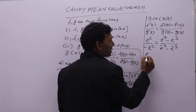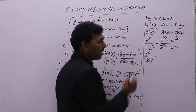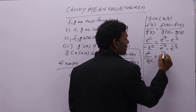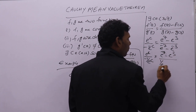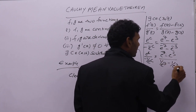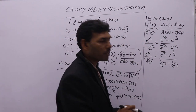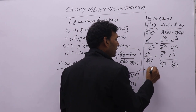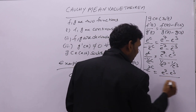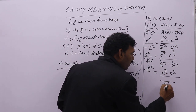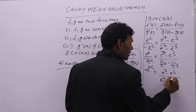So e power minus c can be written as minus 1 divided by e power c. On the right-hand side: e power 7 minus e power 3 in the numerator, and 1 by e power 7 minus 1 by e power 3 in the denominator. The denominator comes to the numerator as e power c times e power c, giving e power 2c. Taking e power 7 times e power 3 as common, the denominator becomes e power 3 minus e power 7.